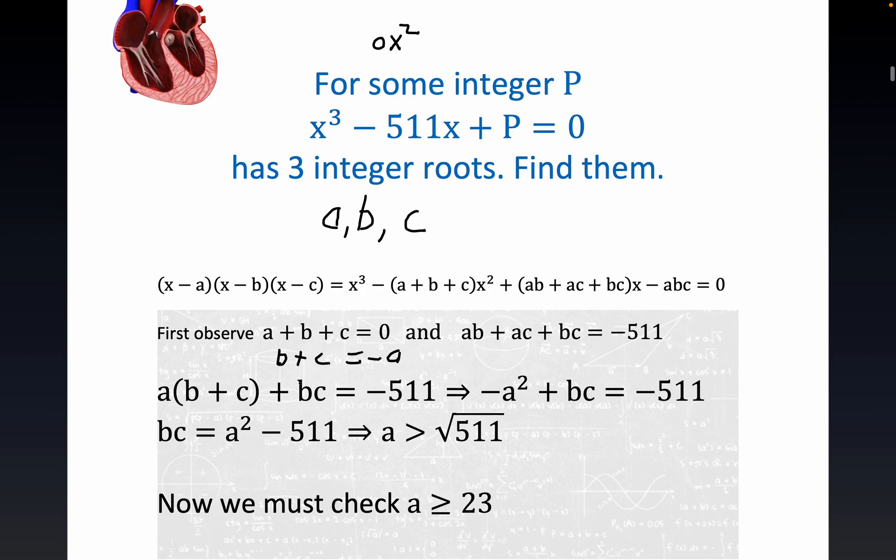And I did that because b plus c is this binomial term here and so this becomes minus a squared plus bc since b plus c equals minus a. Now when you rearrange here you quickly see that a has to be greater than the square root of 511. You could work in the other direction, it could be less than minus the square root of 511, but we're just looking for a solution.